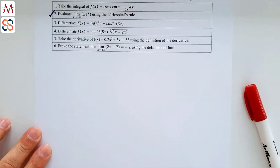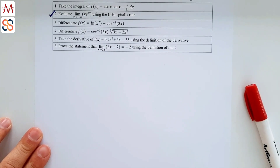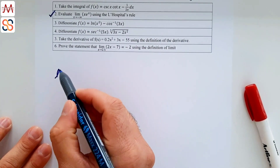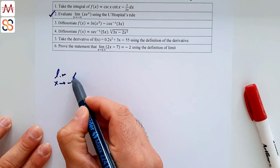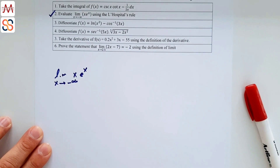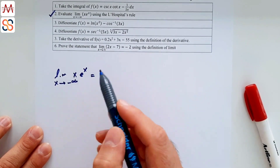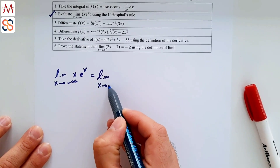Now let's solve question 2: evaluate the limit as x approaches negative infinity of x·e^x using L'Hôpital's rule. To apply L'Hôpital's rule, we need to rewrite this expression in the form of a fraction.